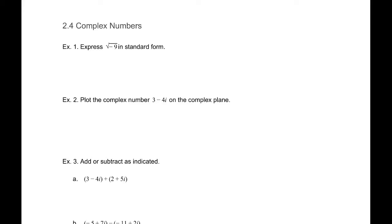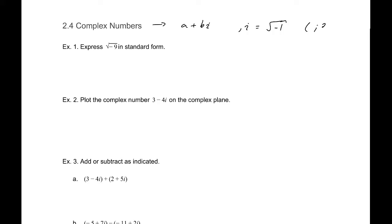Section 2.4: Complex Numbers. A complex number is defined as a number in the form a plus bi, where a and b are real numbers. i is equal to the square root of negative one — another way to state this is that i squared equals negative one. For our purposes, those two statements are equivalent.